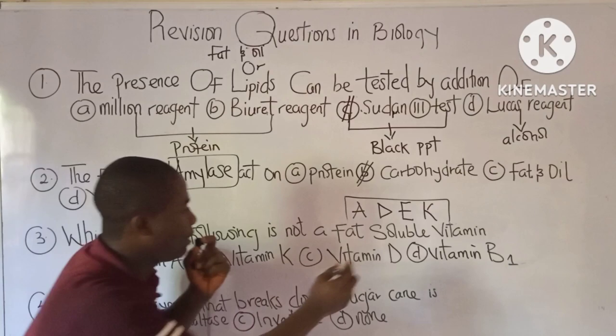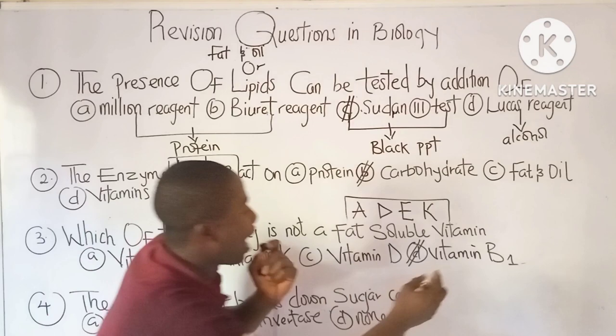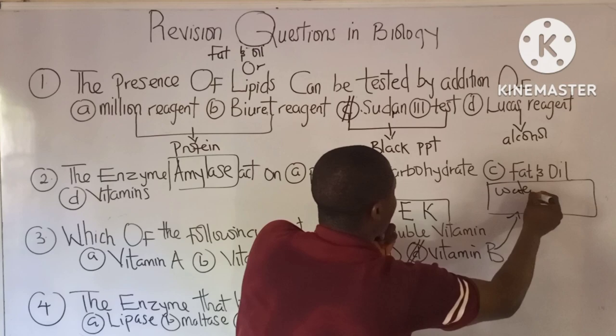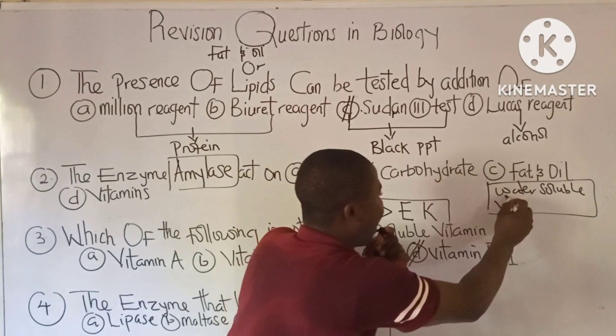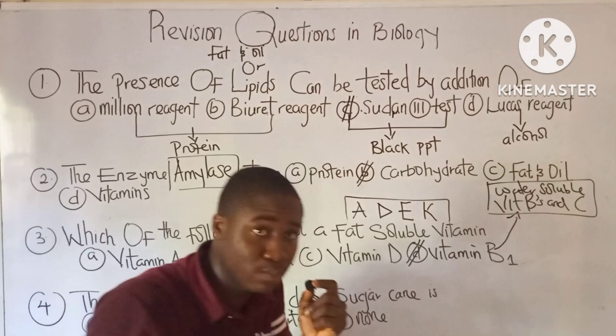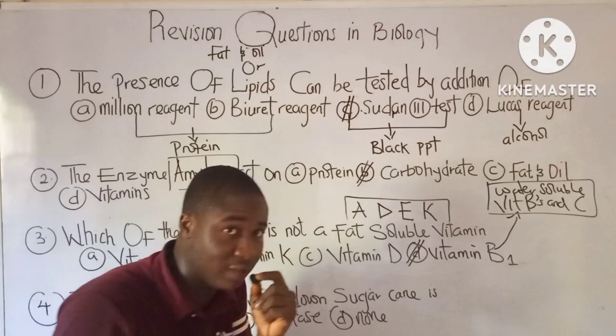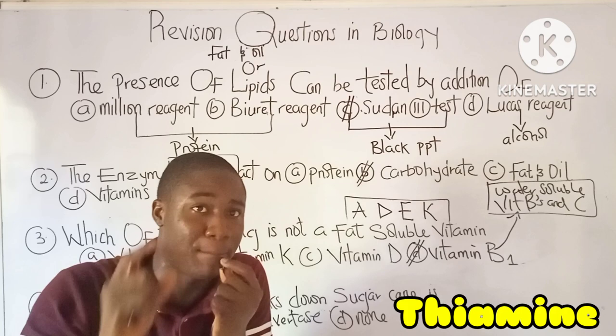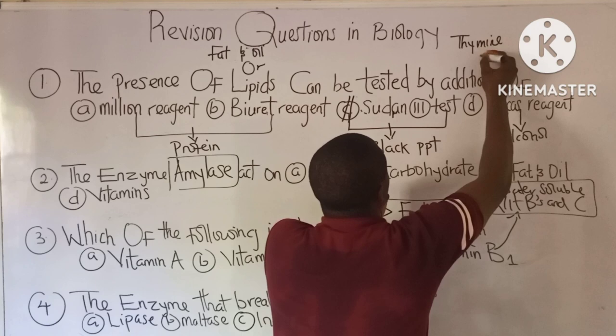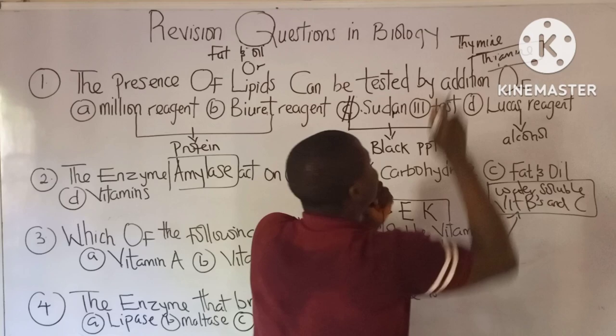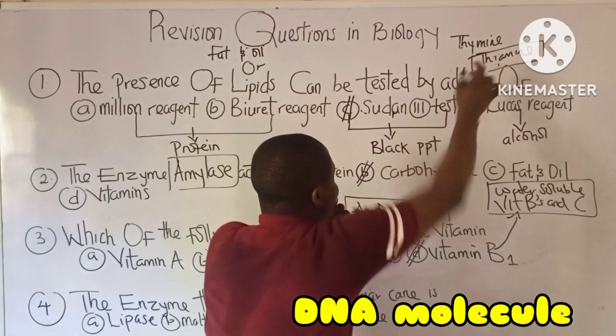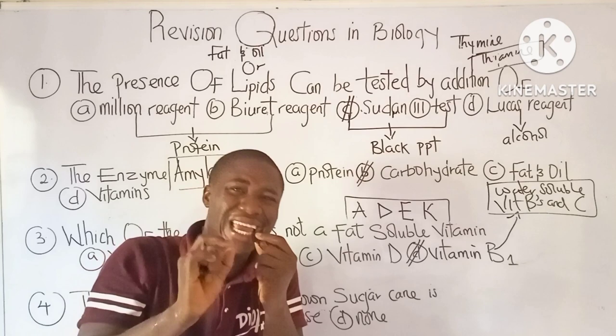Vitamin B1 is not a fat-soluble vitamin. It belongs to the water-soluble vitamins, which consist of the B vitamins and vitamin C. Vitamin B1 has the chemical name thiamine. When this vitamin is deficient, it leads to beriberi, which involves weakness of the muscles.